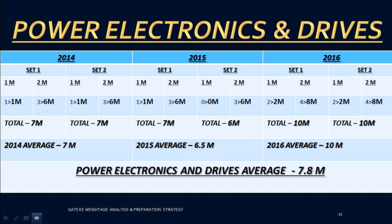Power Electronics is another important core electrical subject. In 2014 it was seven marks, then 6.5 and 10 in subsequent years. The overall average is 7.8 marks, and this year you can expect around eight to nine marks from Power Electronics.